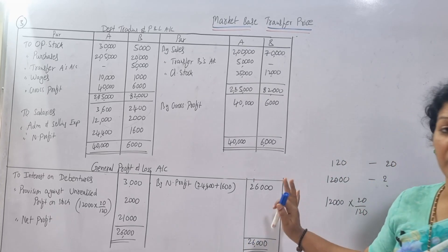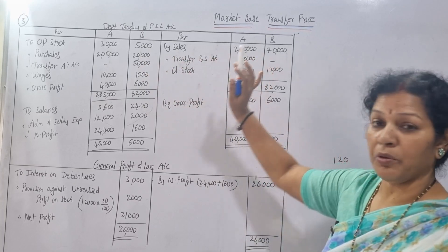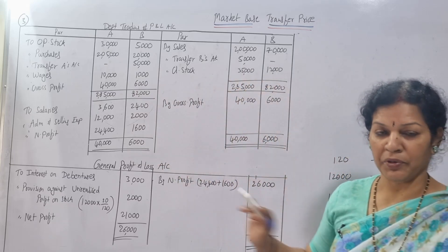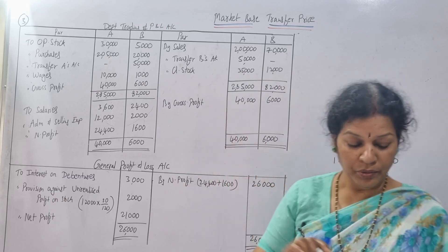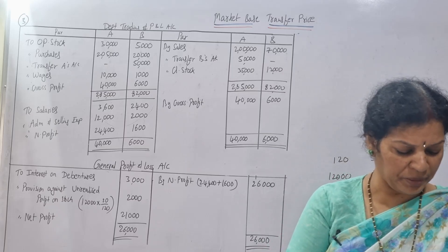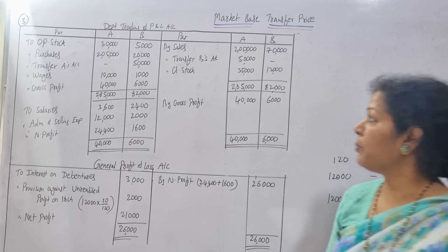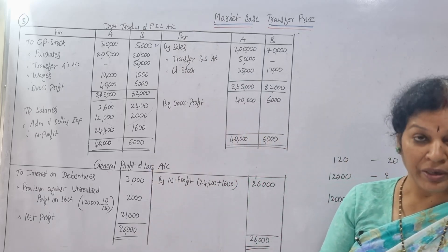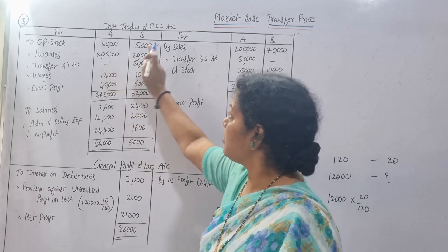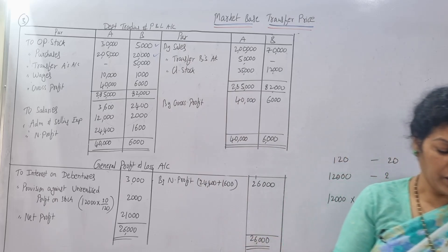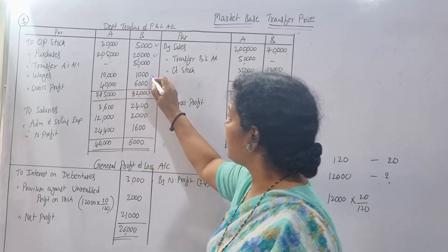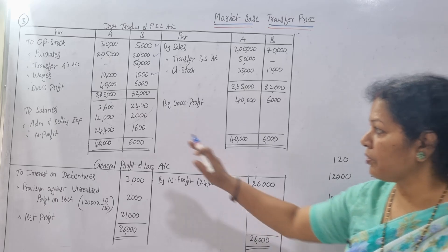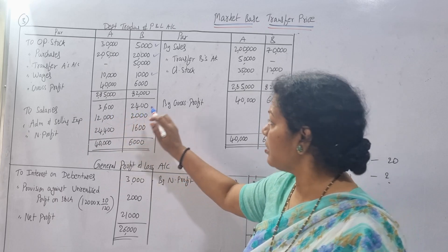Now coming to the problem. The trading and profit and loss account for Department A and B — and later a general/combined profit and loss account. Now we post each item. Opening stock: 30,000 and 5,000 — posted as 30,000 and 5,000. Purchases: 2,05,000 and 20,000 — debit side 2,05,000 and 20,000. Wages: 10,000 and 1,000 — posted as 10,000 and 1,000.